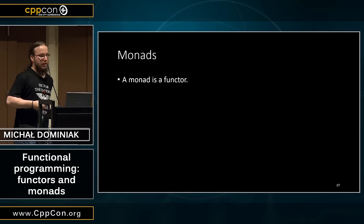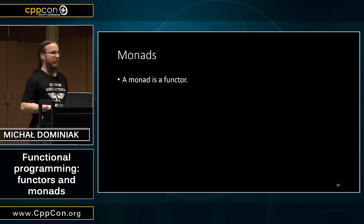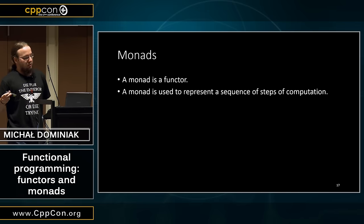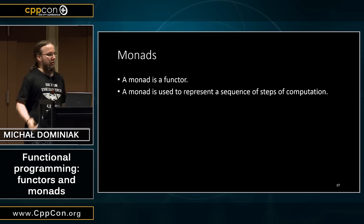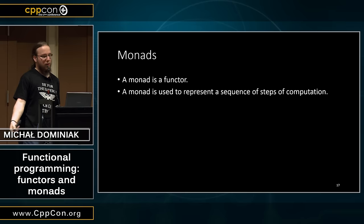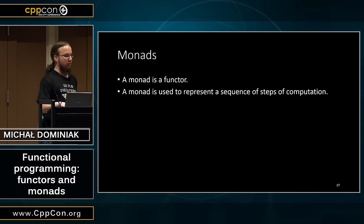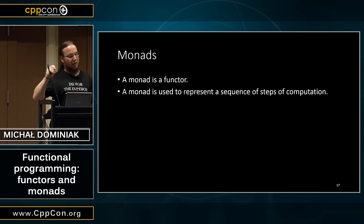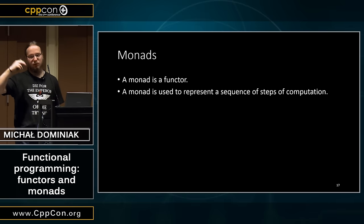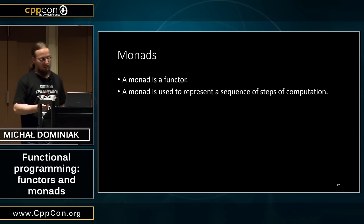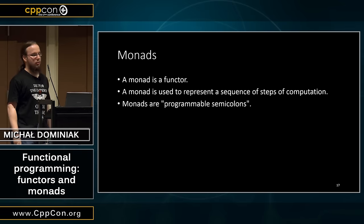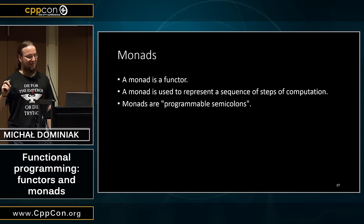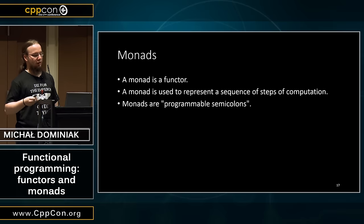So a monad is a functor — every monad is a functor, so there is a value in there, or more values, or no value. A monad can be used to represent a sequence of steps of computation. When talking about optional we have a computation that can fail, or a sequence of computations that can fail at any given point. If we are talking about a future, we have a sequence of asynchronous operations to be called. Monads are sometimes called 'programmable semicolons' because monadic bind is kind of like a semicolon, but you can control what exactly it does.